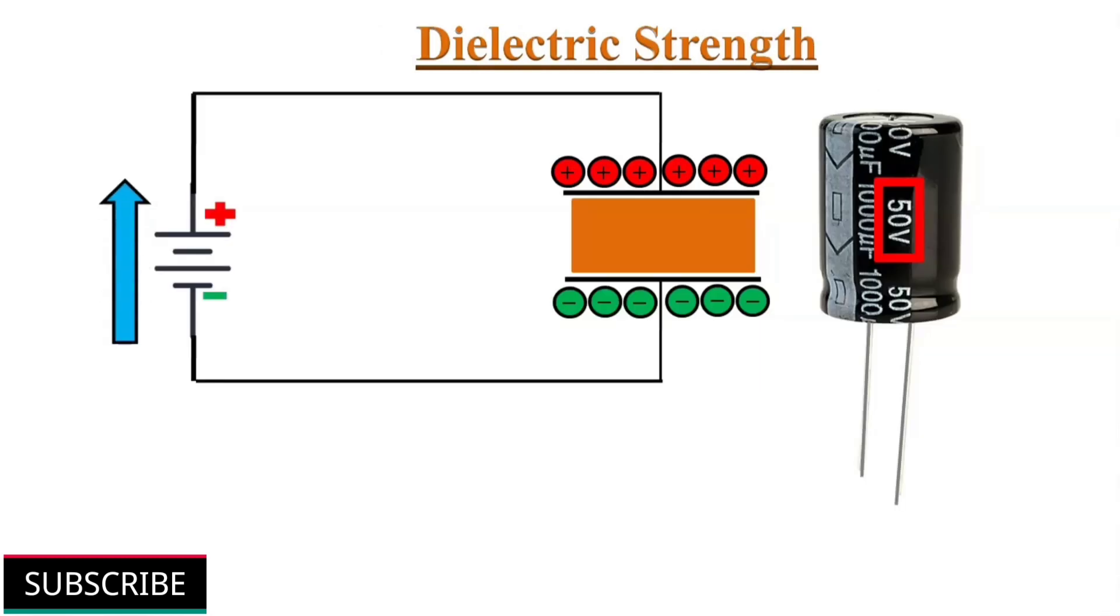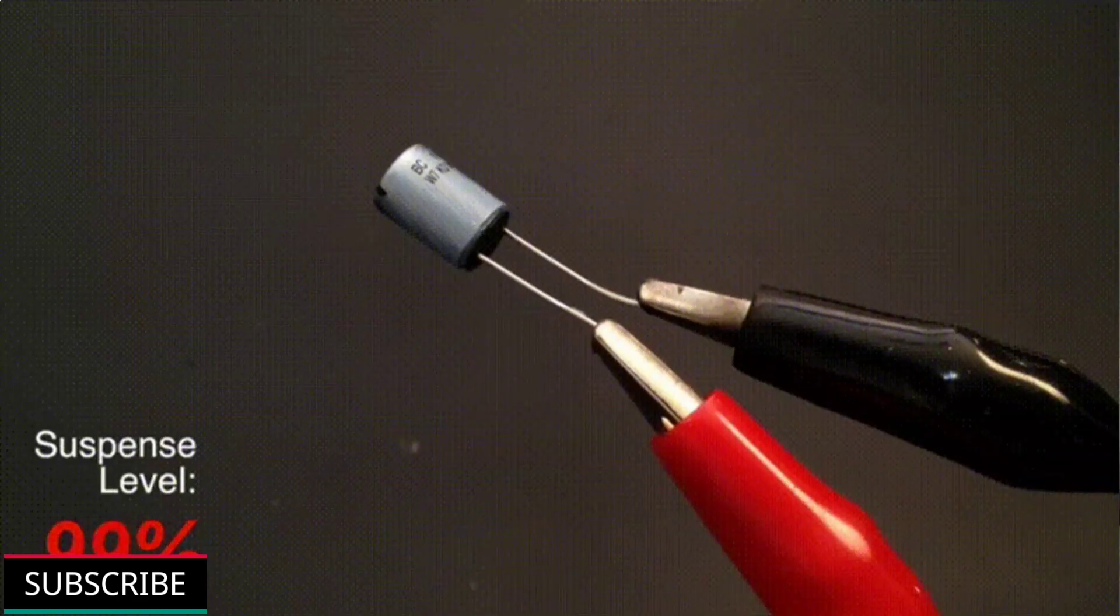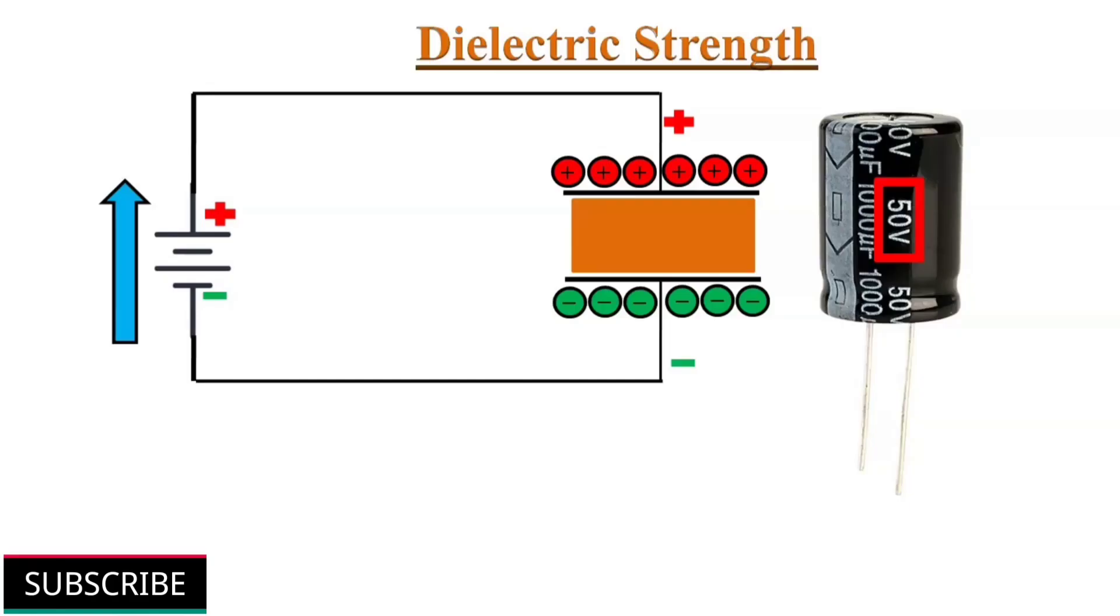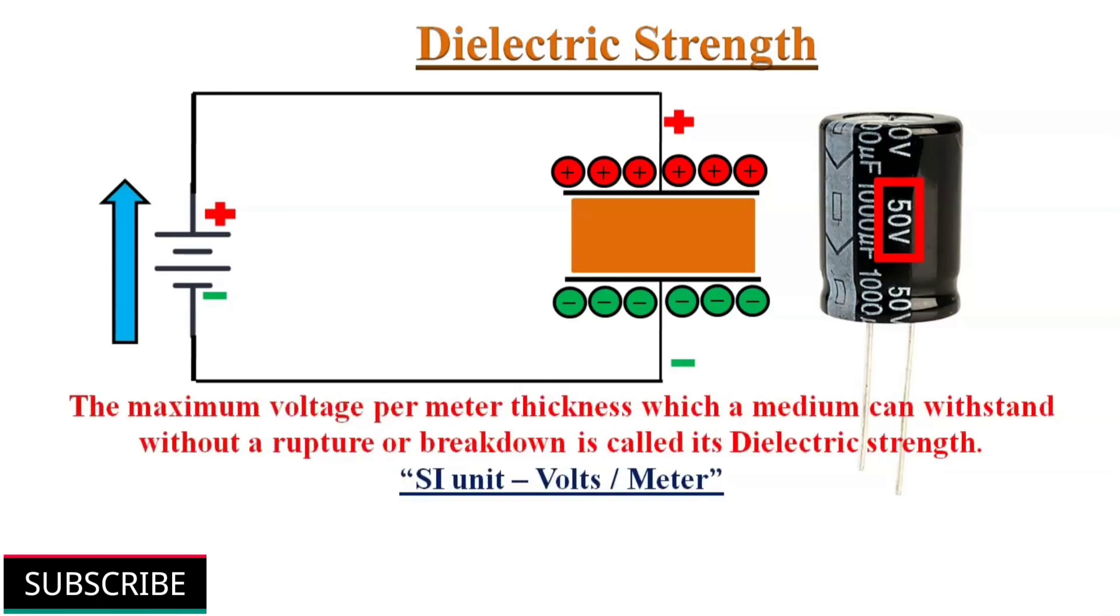As the voltage between the plates of a capacitor increases beyond the specified voltage rating, the dielectric medium comes under increasing stress till it can no longer bear it. At one stage electric breakdown occurs accompanied by spark between the two capacitor plates. The maximum voltage per meter thickness, which a medium can withstand without a rupture or breakdown is called its dielectric strength. SI unit is volts per meter.